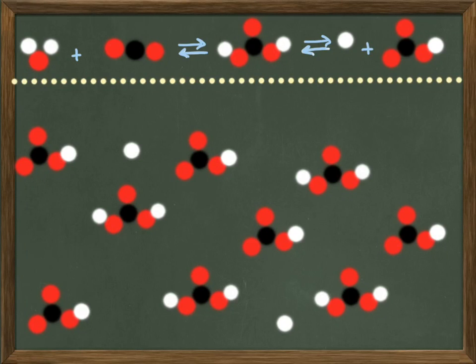Conversely, if you had a very low level of hydrogen ions, then the carbonic acid could release some of its hydrogen ions, forming bicarbonate, and thus reestablishing a balance.